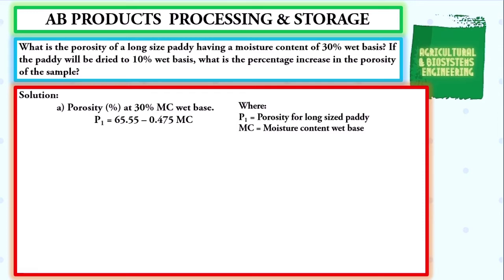Take note that there is another formula used if the problem states a medium-sized paddy. Using the formula, we substitute values. Porosity is equal to 65.55 minus 0.475 times the moisture content of 0.30. We simply solve, giving us an answer for our porosity of 65.4075%.